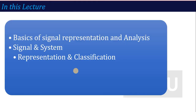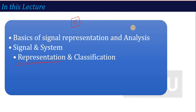From this lecture we are going to start unit number 5. In unit number 5, the first thing we are going to talk about is signals — what are signals, which are the categories of signals, and how signals are represented.